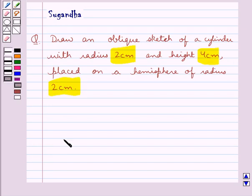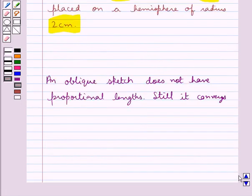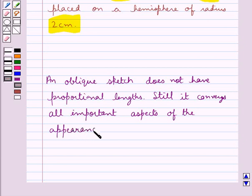First let's see what is an oblique sketch. An oblique sketch does not have proportional length, still it conveys all important aspects of the appearance of the solid. This is the key idea to be used in this question. Now, let's proceed with the solution.